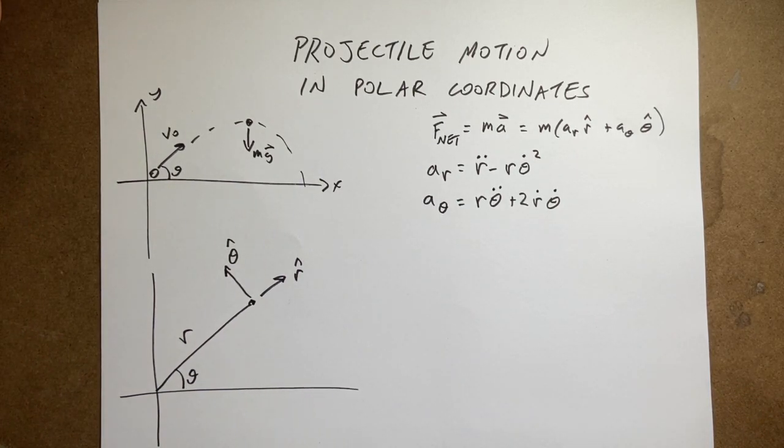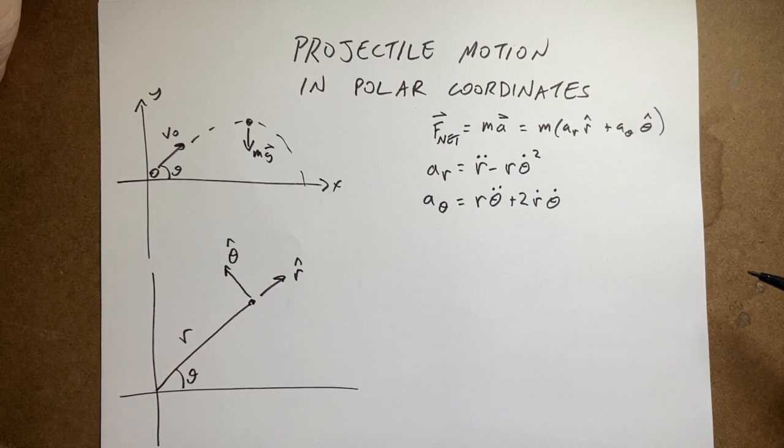Continuing with polar coordinates. Now what I would like to do is look at projectile motion in polar coordinates. And here's where you would say, wait, wait, wait, that's crazy. Why would you do crazy stuff like that? Why would you do projectile motion in polar coordinates? Cartesian coordinates makes more sense. And yes, that's true.